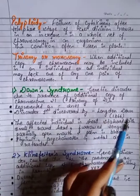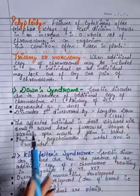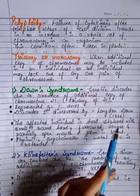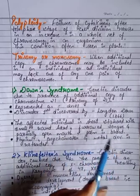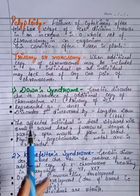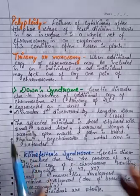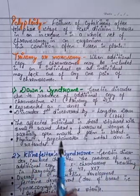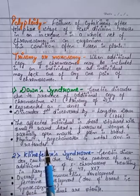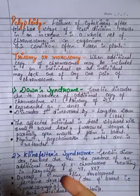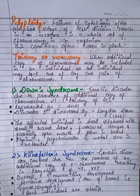Down syndrome was first discovered by Langdon Down in 1866. The affected individual is short-statured with a small round head, furrowed tongue, partially open mouth, and broad palm.